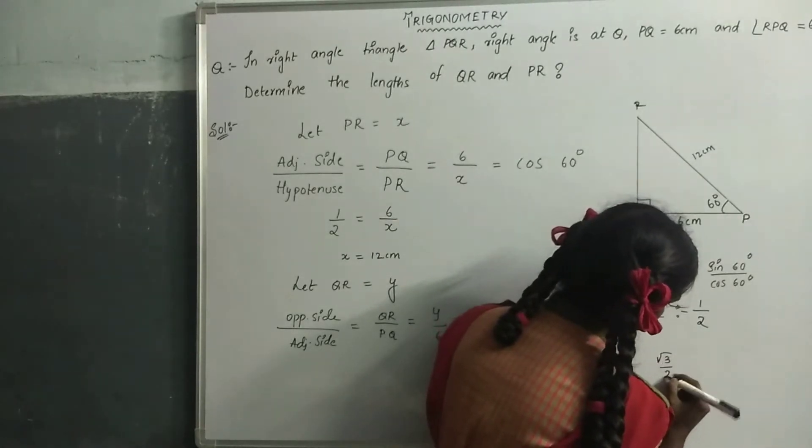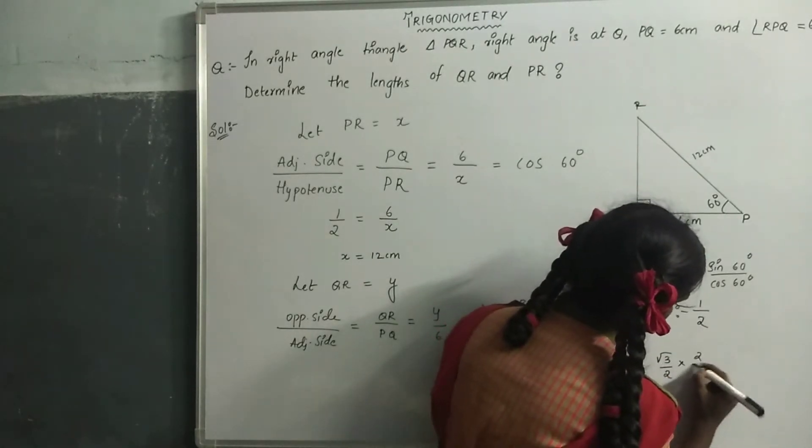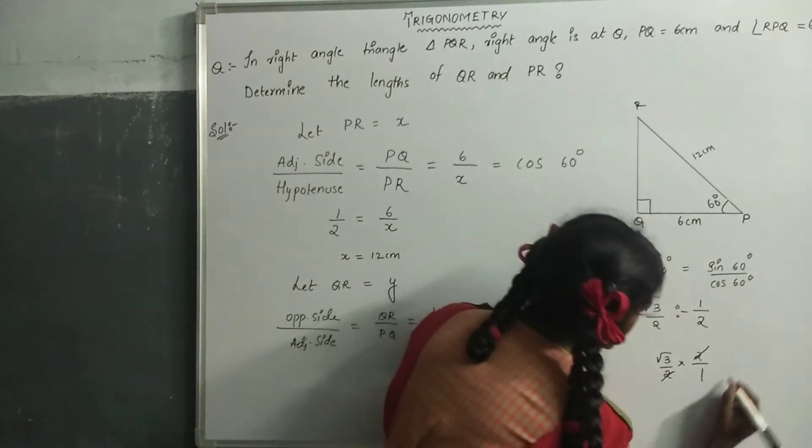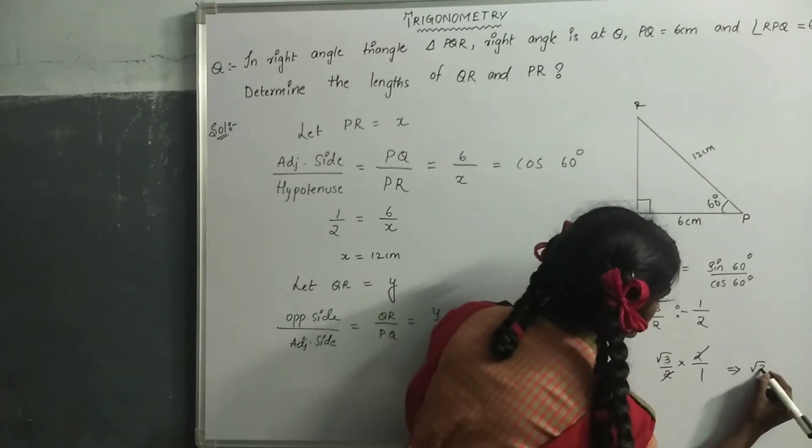Root 3 by 2 times 2 by 1. The 2s cancel, giving root 3.